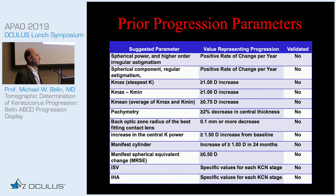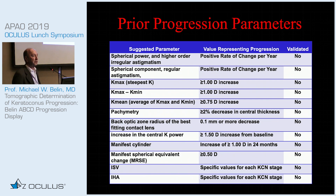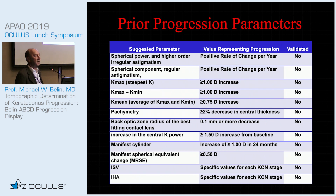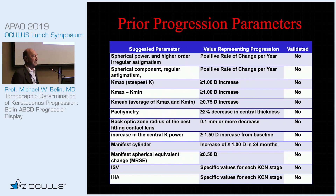If you look at all the different progression parameters that have been published, every single one except pachymetry consists of anterior surface parameters. In other words, disease is said to progress only when you've already lost more vision. That's not the approach of medicine — it would be like a doctor saying we'll start you on blood pressure medication after your first stroke. The goal is prevention of disease.